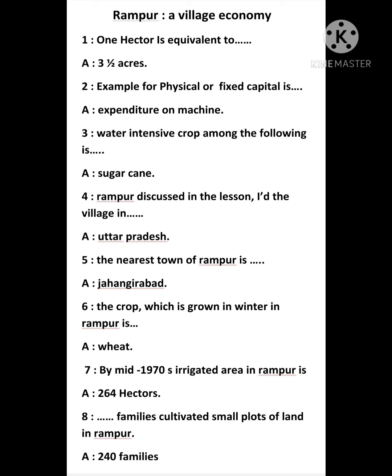Sixth question: the crop which is grown in winter in Rampur is — answer is wheat. Seventh question: by mid-1970s, irrigated area in Rampur is — answer is 264 hectares. Eighth question: how many families cultivated small plots of land in Rampur — answer is 240 families.